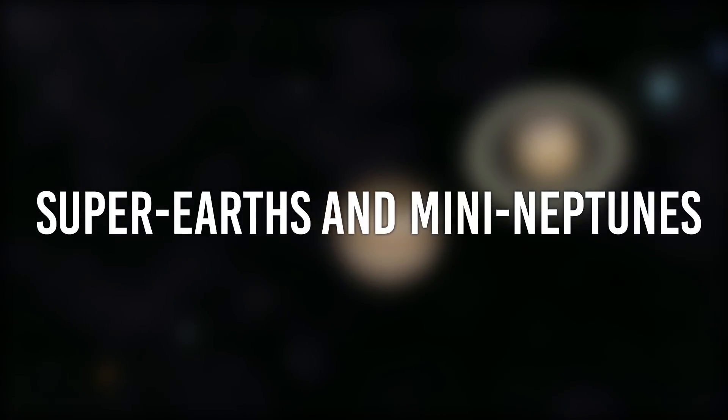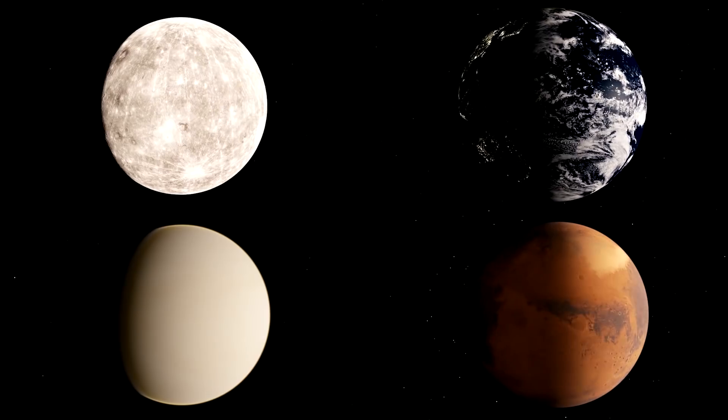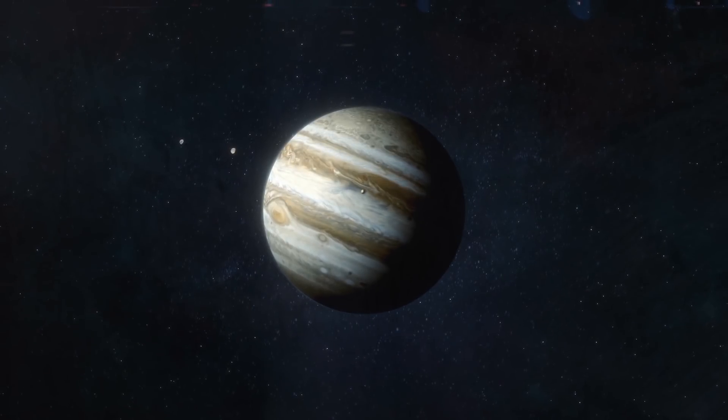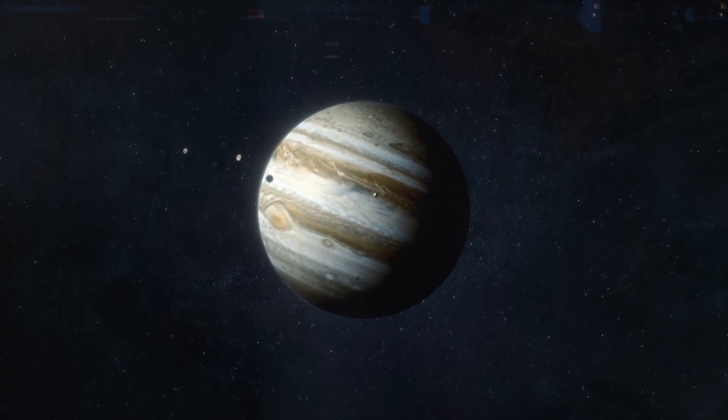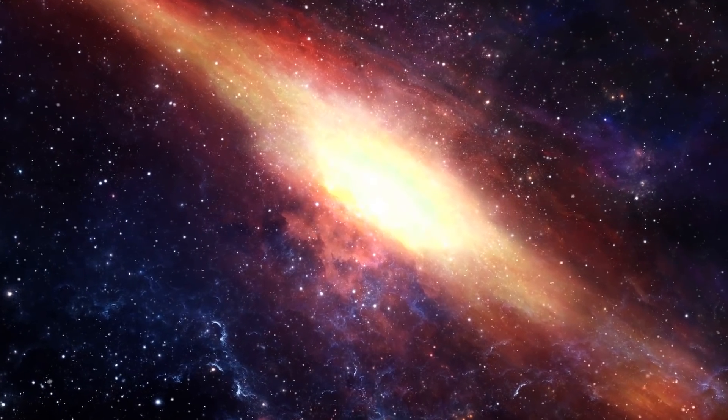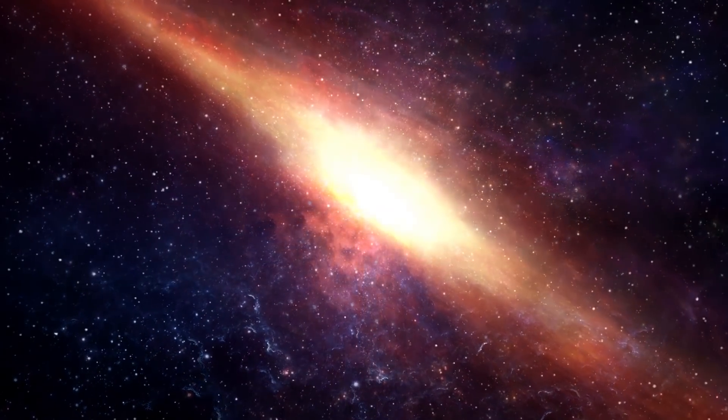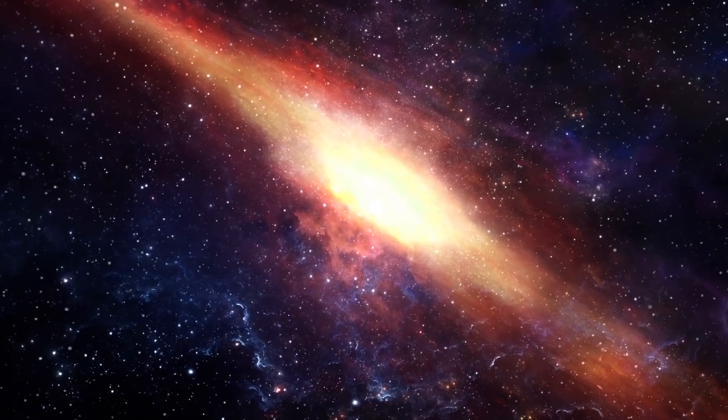Super-Earths and mini-Neptunes. There are two types of planets in our solar system, tiny rocky planets and giant gaseous planets. In contrast, the solar systems we have found do not contain these planets. Both rocky planets and gas giants are scarce in the universe. Our solar system is very different from most solar systems in the Milky Way.